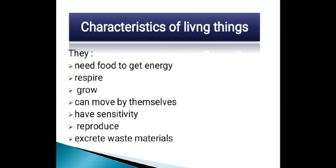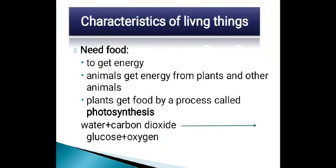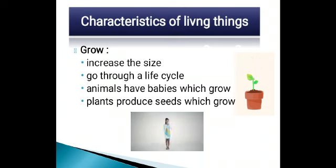Number one: need for food. Living things need energy in order to perform their life processes, and this energy is provided by their food. Animals cannot prepare their own food, so they get energy by eating different plants and other animals. Plants, on the other hand, contain chlorophyll and make their own food through a process called photosynthesis, in which they use water and carbon dioxide in the presence of sunlight to prepare glucose and oxygen.